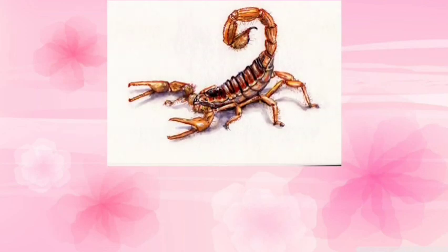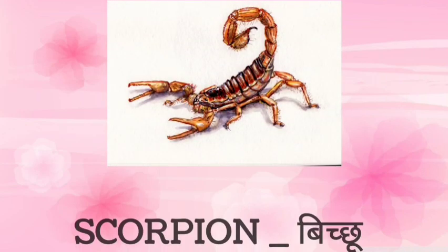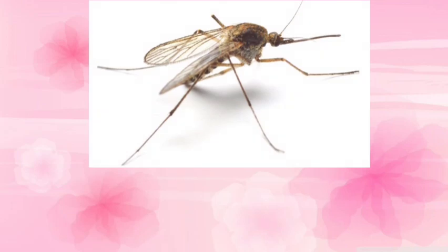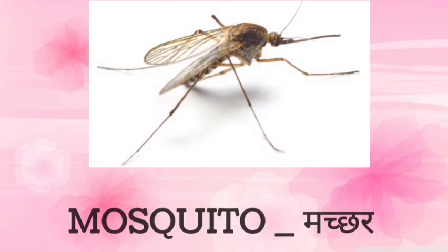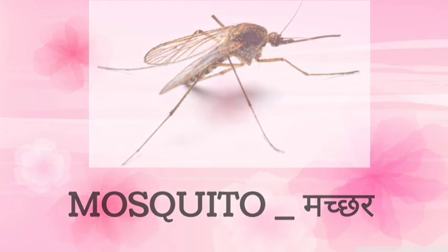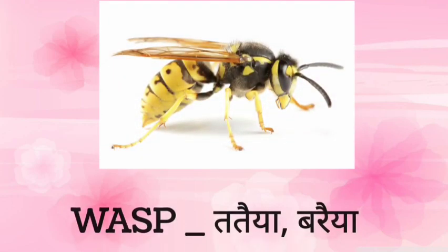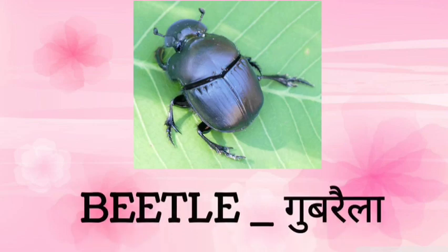Scorpion — scorpion means bichu. Next is mosquito — mosquito means machchar. Next is wasp — wasp means tataya ya baraya. Next is beetle — beetle means gubrella.